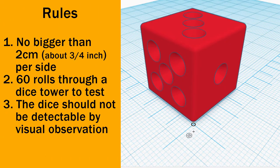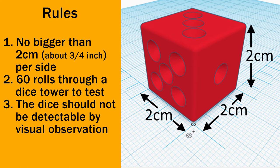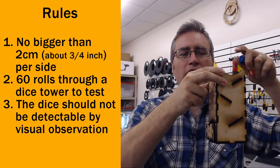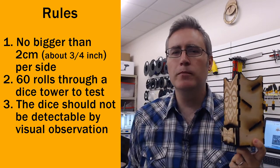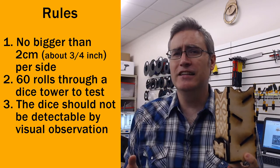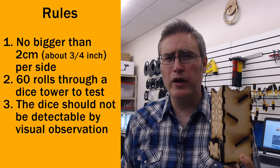One, your dice have to be no bigger than 2 centimeters or 20 millimeters on each side. Because two, you're going to be rolling your dice through a dice tower so that we're sure everybody's getting a fair one. And if you have a big dice, it'll get stuck and won't make it all the way through.